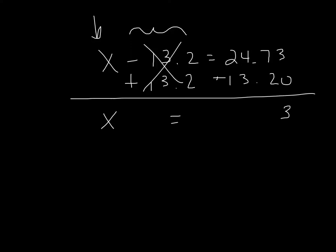3 plus 0 is 3, 7 plus 2 is 9, bring my decimal point down, 7 and 3. So my answer is 37.93, and I can put this 37.93 back in and check my work to see if it actually does balance.